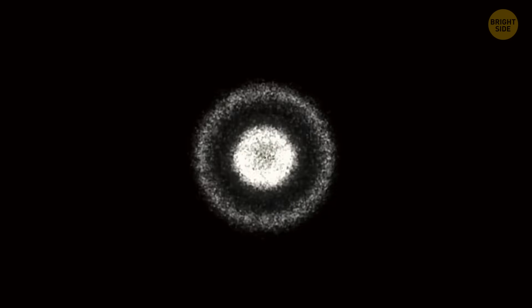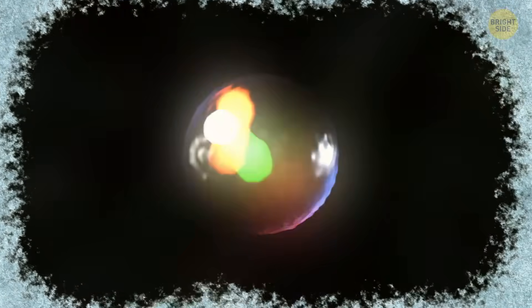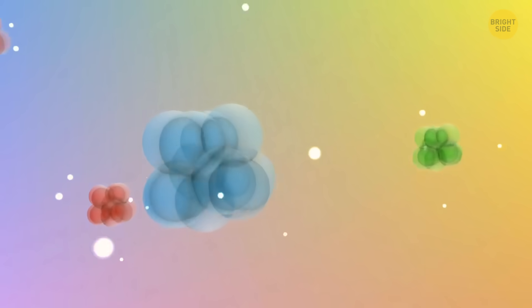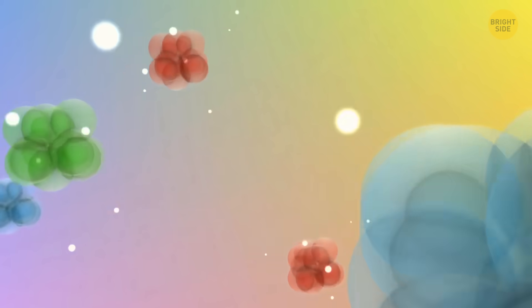You might also know that all the atoms around us are constantly moving, even at very low temperatures, when everything freezes and nothing can stop them. Their movement is random, chaotic, and unpredictable. They're just jiggling in space.